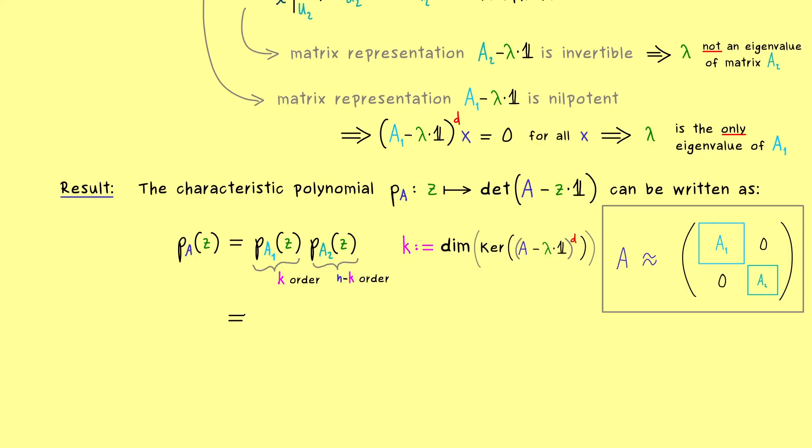And in addition we also know it's the only zero of the characteristic polynomial in the front. So this means we have exactly k zeros which are given as lambda. So we can write it as linear factors lambda minus z.